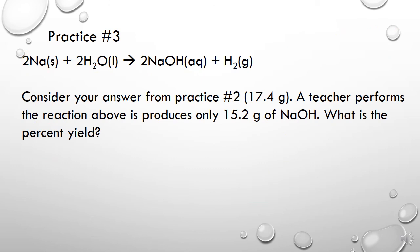Last practice question here, and this covers another type of question you get with stoichiometry. This one says consider your answer from practice number two, which again was 17.4 grams of NaOH that could be produced. It says a teacher performs the reaction above, throwing sodium in water, and it produces only 15.2 grams of sodium hydroxide. What is the percent yield? Remember that percent yield is the amount that is actually produced over the amount that could theoretically be produced. Go ahead and pause the video, give it a shot, see what you get, and then we'll come back and look at the solution.